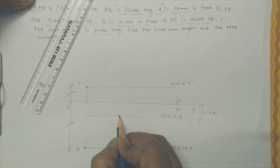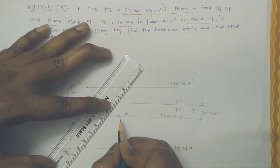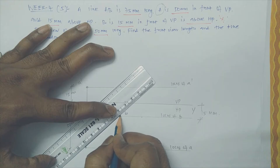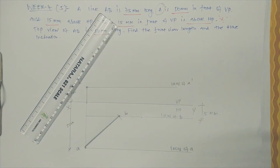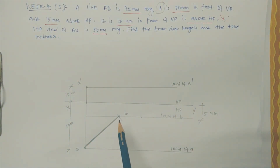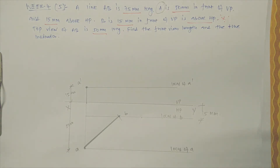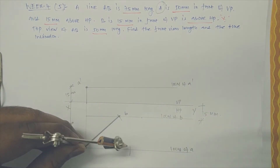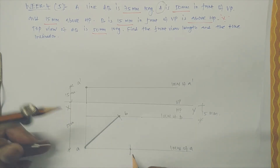So we have directly obtained the apparent length. Let me draw and darken point B — this is the apparent length A to B in the top view. Now the true length is given as 75mm. When we rotate this line, we may get the true inclination. Let us rotate this line — we are getting a point here, and erecting a vertical line from it.